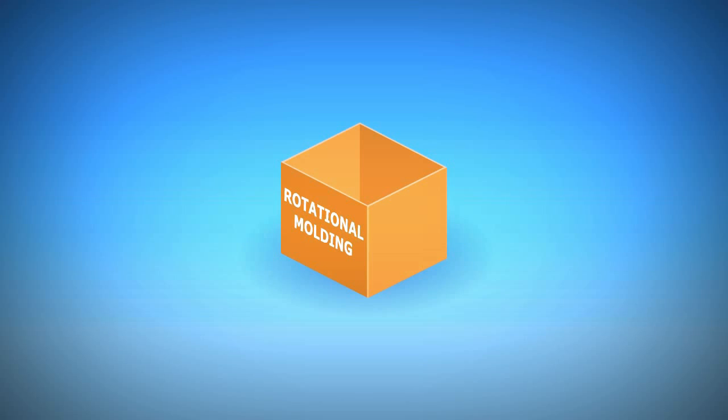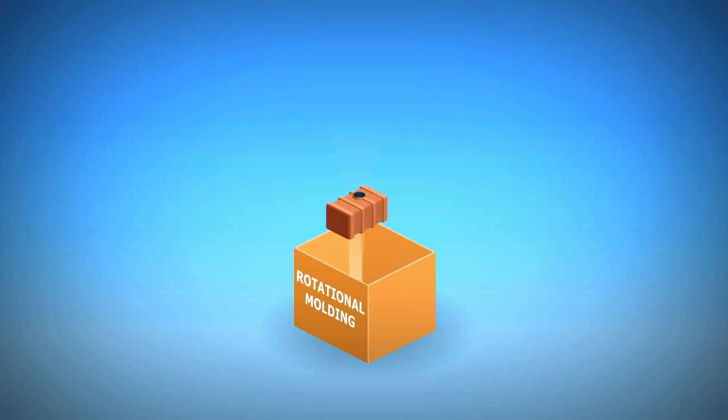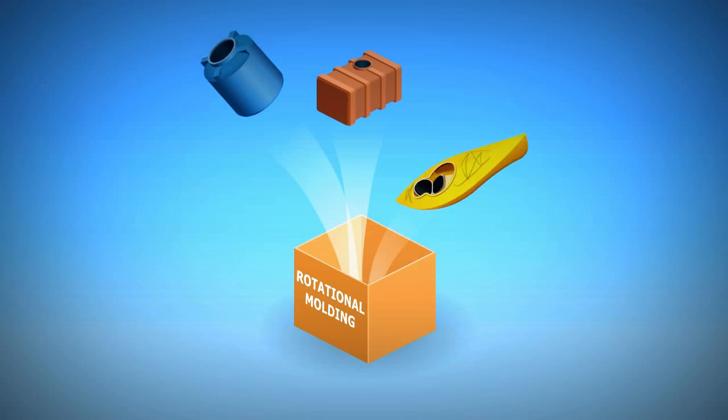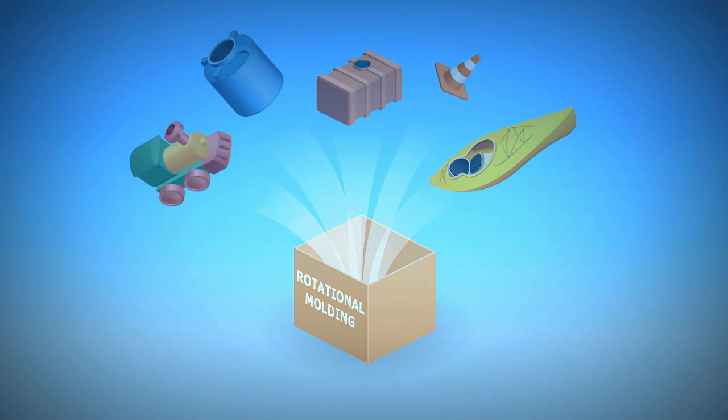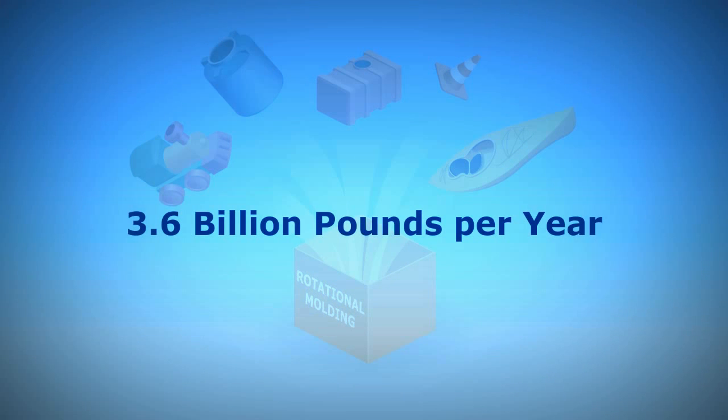Rotational molding - it's how most large plastic products are made. Things like water and fuel tanks, kayaks, road barriers and toys are all rotationally molded. Over 3.6 billion pounds of plastic are rotationally molded each year.